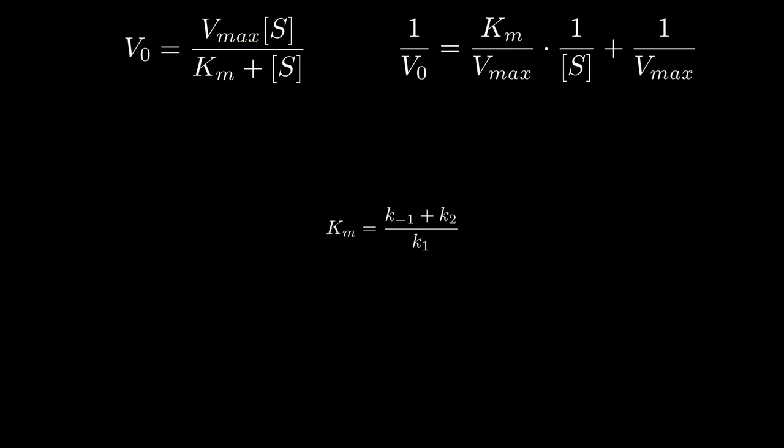However, in most enzymes, K-1, K2, and K1 are comparable and cannot become insignificant when compared to each other. As a result, Km is a complicated function of all three rate constants and can only roughly imply the rate of ES breakdown compared to formation, with a higher value corresponding to more breakdown compared to formation. Remember, ES breakdown goes two ways: the dissociation of the substrate and the dissociation of the product.